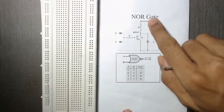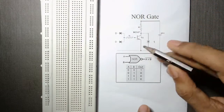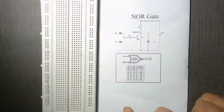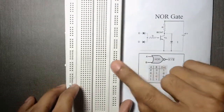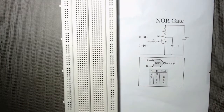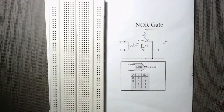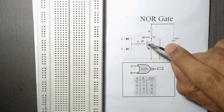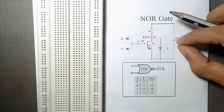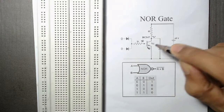In this video we will learn the working of a NOR gate implemented by using two diodes and a simple transistor, and then we will design it on a breadboard. Here is the circuit diagram of the NOR gate. We have used two diodes and one NPN transistor, and a 9-volt battery is applied across the collector and emitter terminal of the transistor.